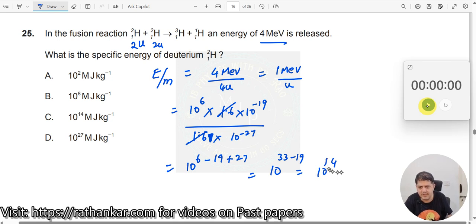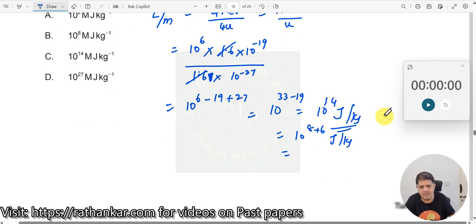So, 10 to the power of 14, what is this unit here? Joules per kg. Now, you see, it is in terms of Mega Joules over here. Let me convert this. This should be 10 to the power of 8 plus 6. 8 plus 6 is 14, right? Because Mega is 6. Joules per kg, which should now be equal to 10 to the power of 8 Mega Joules per kg.